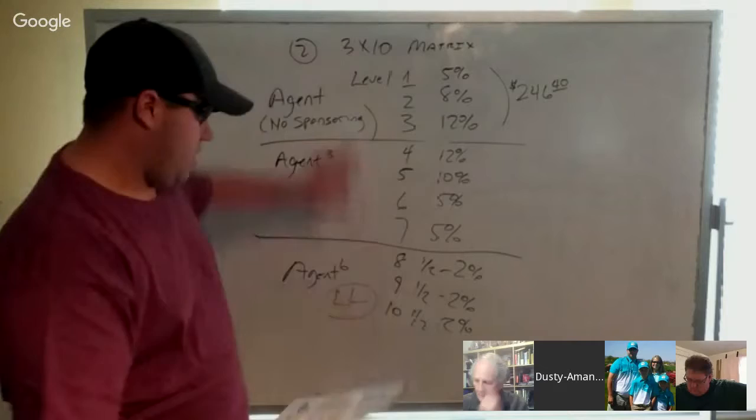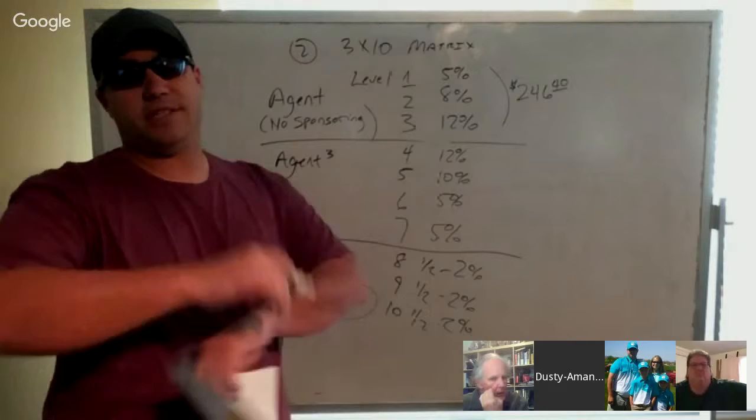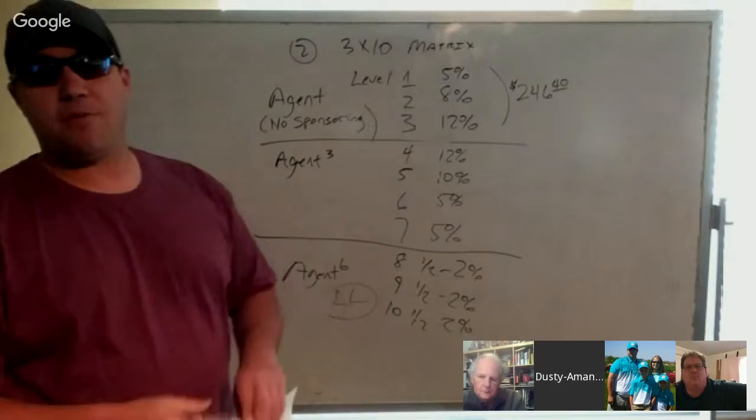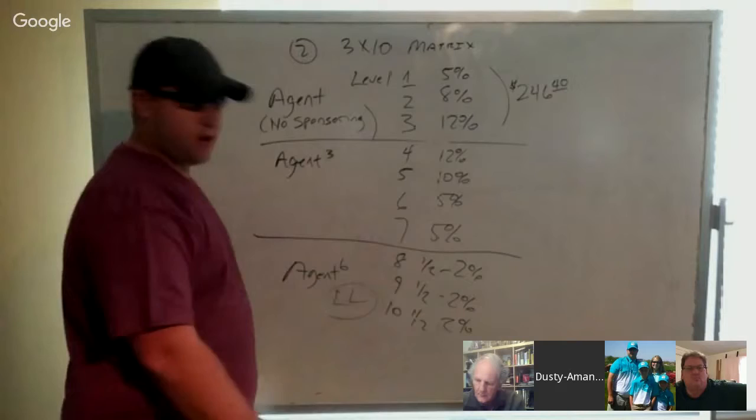If someone goes inactive in our matrix, just as in our enrollment lineage with all of our fast start money, check matching, and everything, we use dynamic compression. The computer automatically reads it, compresses everything up, so there's nothing missed to the distributors that have earned it. Are we good there? Thumbs up. We're good. Bob?